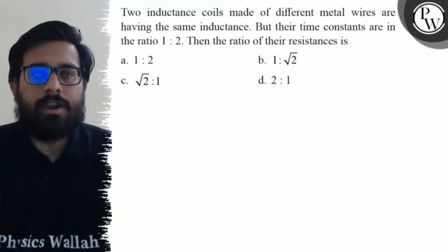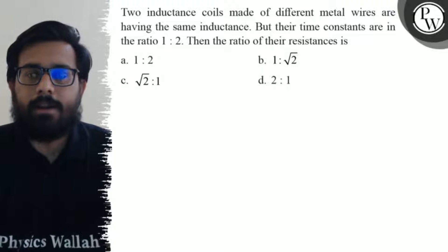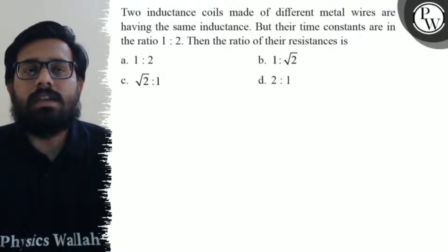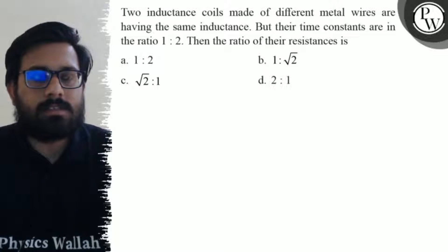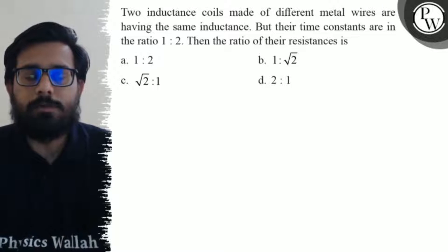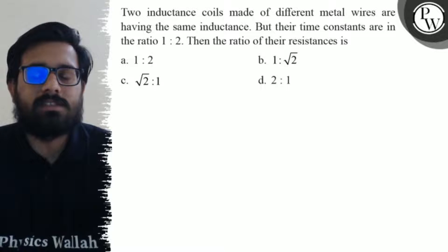Hello, let's see the question. Two inductance coils made of different metal wires are having the same inductance, but their time constants are in the ratio 1:2. Then the ratio of their resistances is: a) 1:2, b) 1:√2, c) √2:1